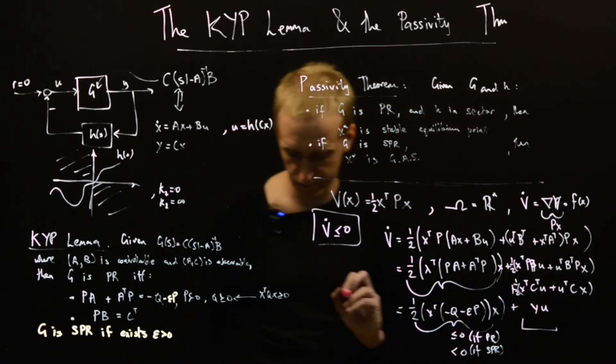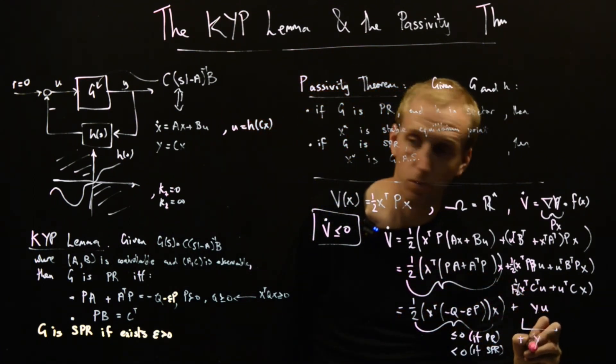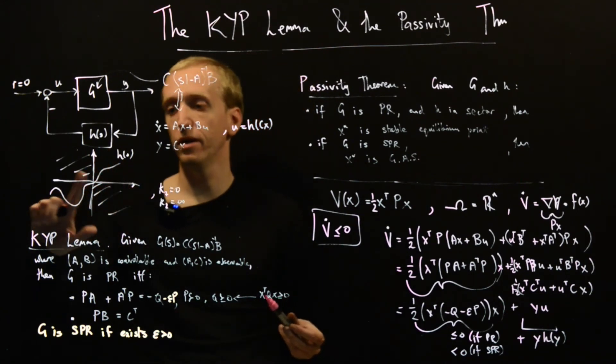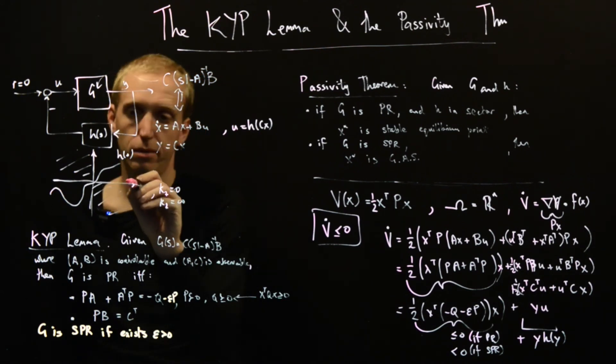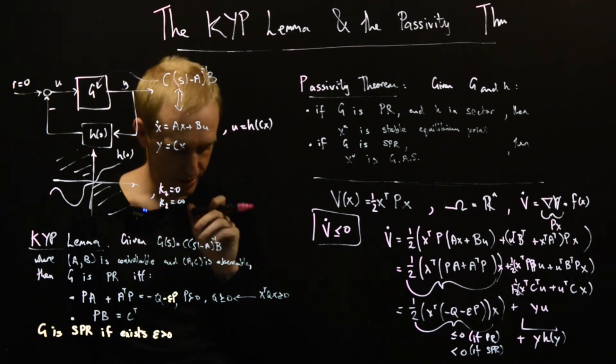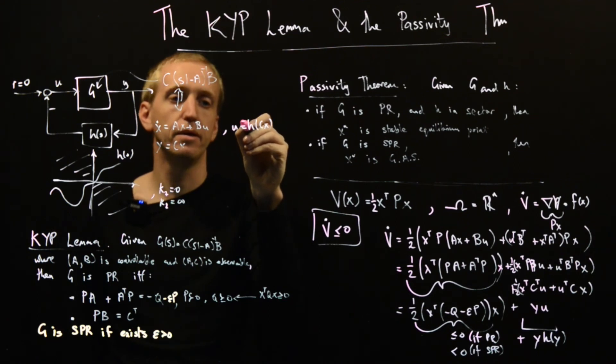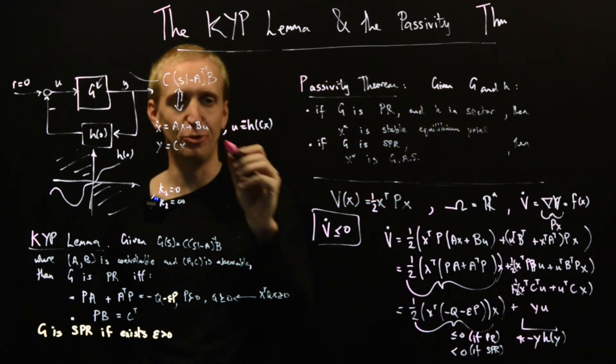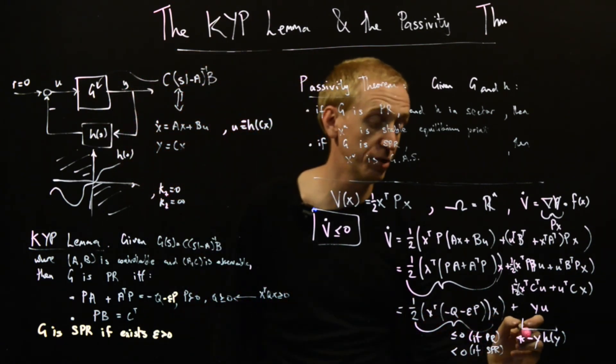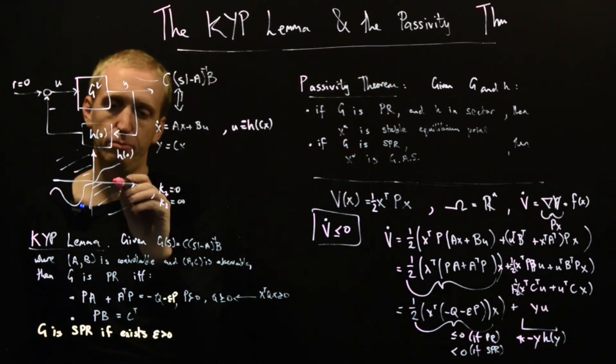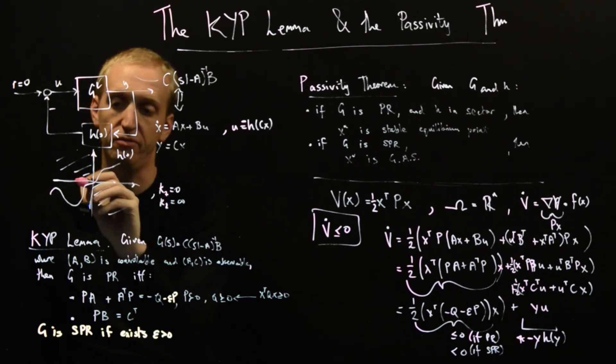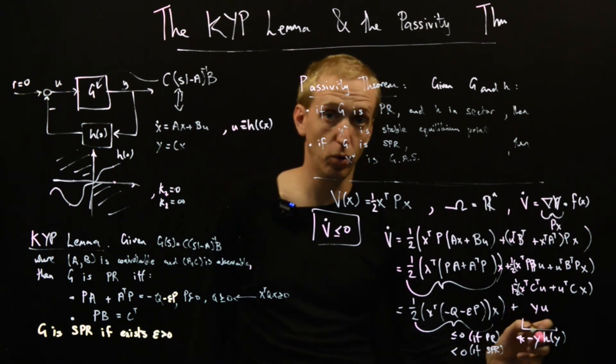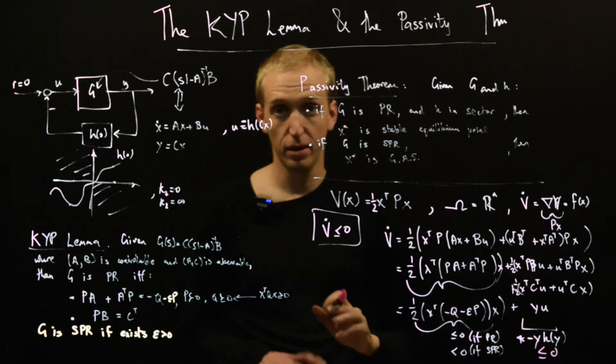This term here is either less than or equal to zero or less than zero. How about this term here? This is just equal to y times h of y. If we look at our sector bound here, we see that - I've lost a minus sign somewhere. We've got a negative feedback convention here. This is the system we're interested in where there's a minus h of x coming in like this. So this is equal to minus y times h of y. What do we notice? If the input to our nonlinearity is positive, then the output of our nonlinearity is positive. If the input to our nonlinearity is negative, the output to our nonlinearity is negative. So the product here will always have positive sign. So this thing here is less than or equal to zero.